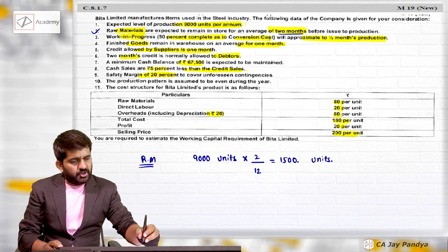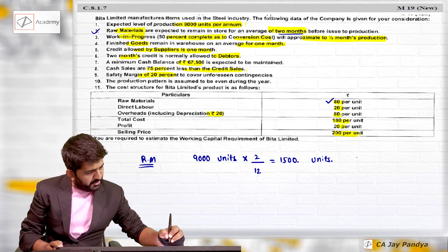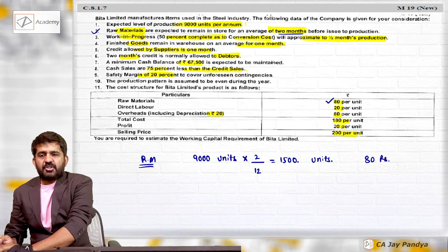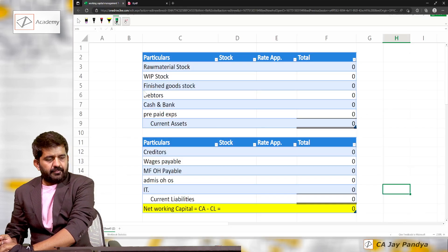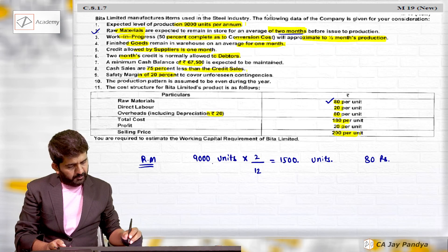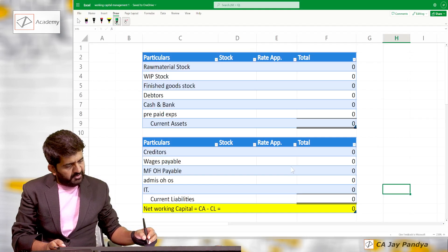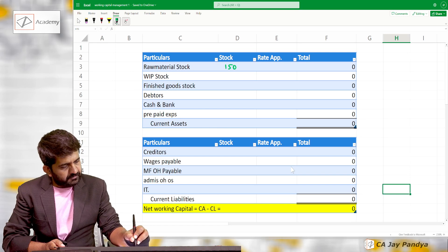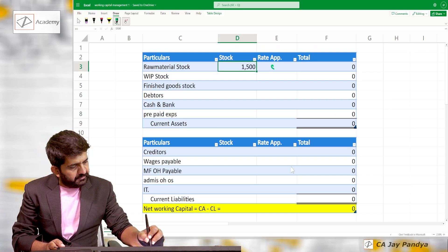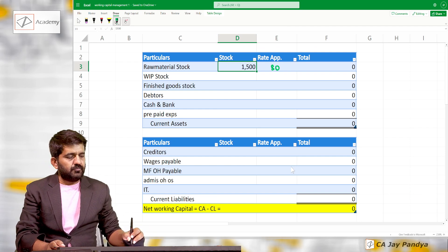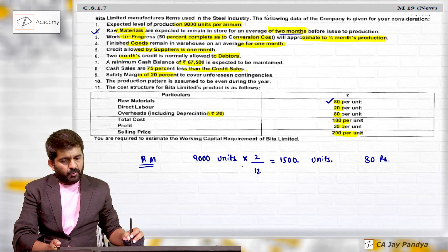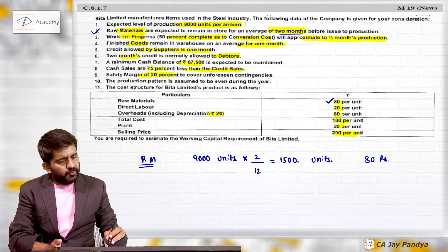For raw material stock, the price to be taken into consideration is only the raw material cost, which is ₹80. Opening our actual sheet and putting in all the points: raw material stock will be 1,500 units at a rate of ₹80, giving a total of ₹1,20,000 for raw material stock.